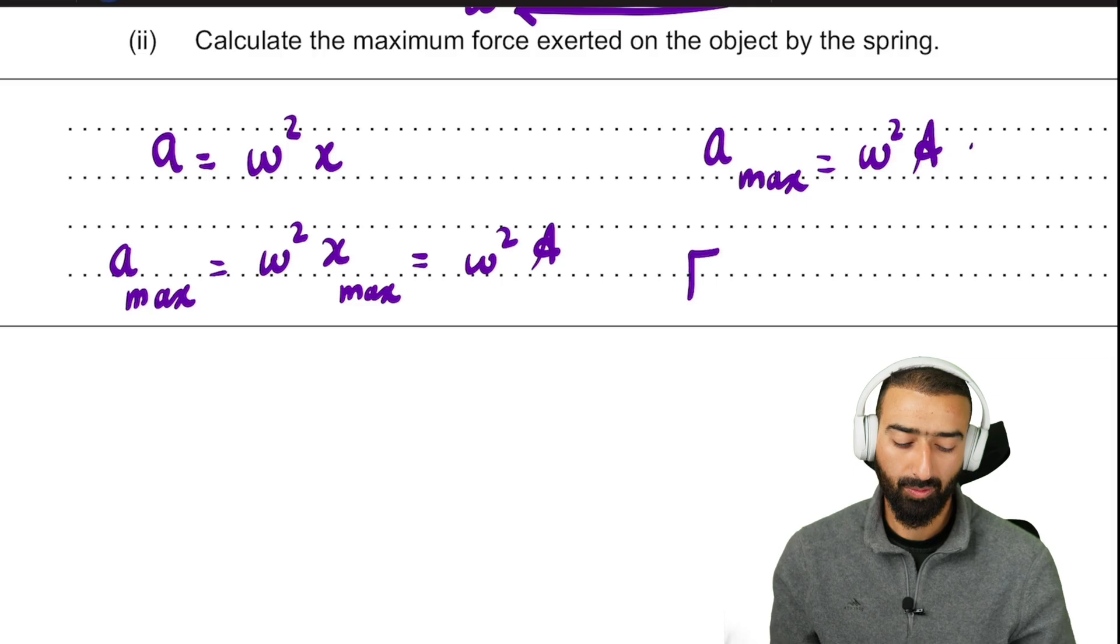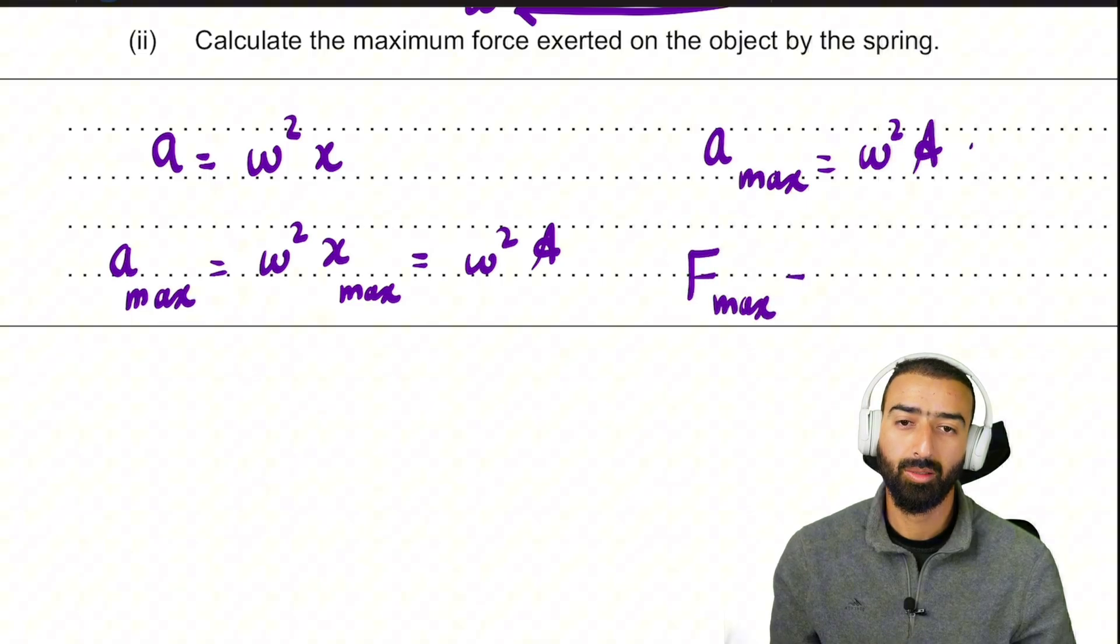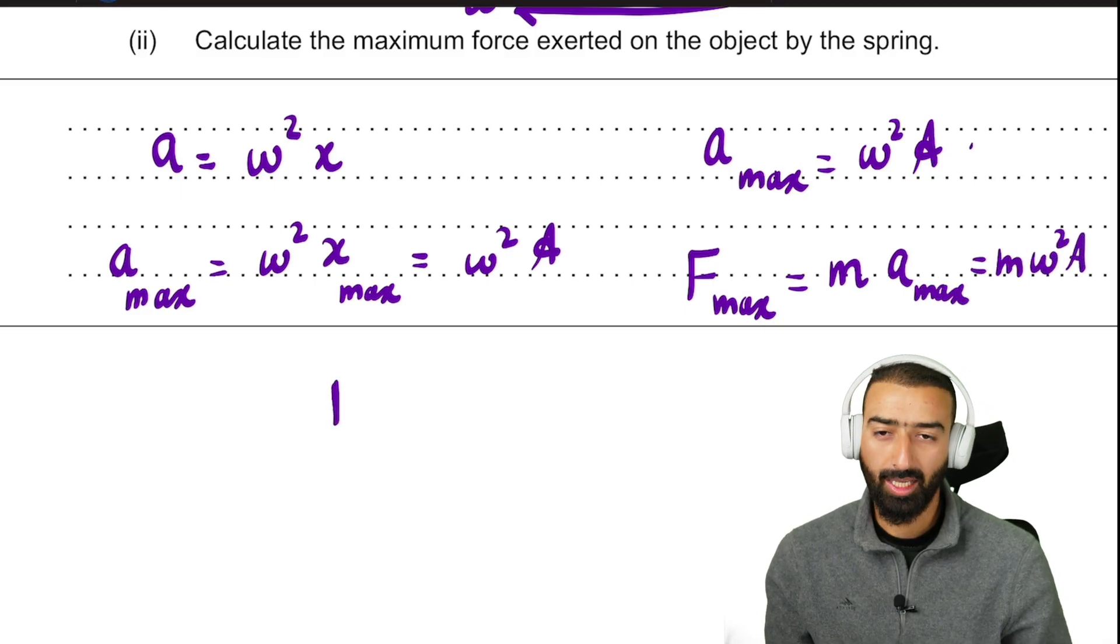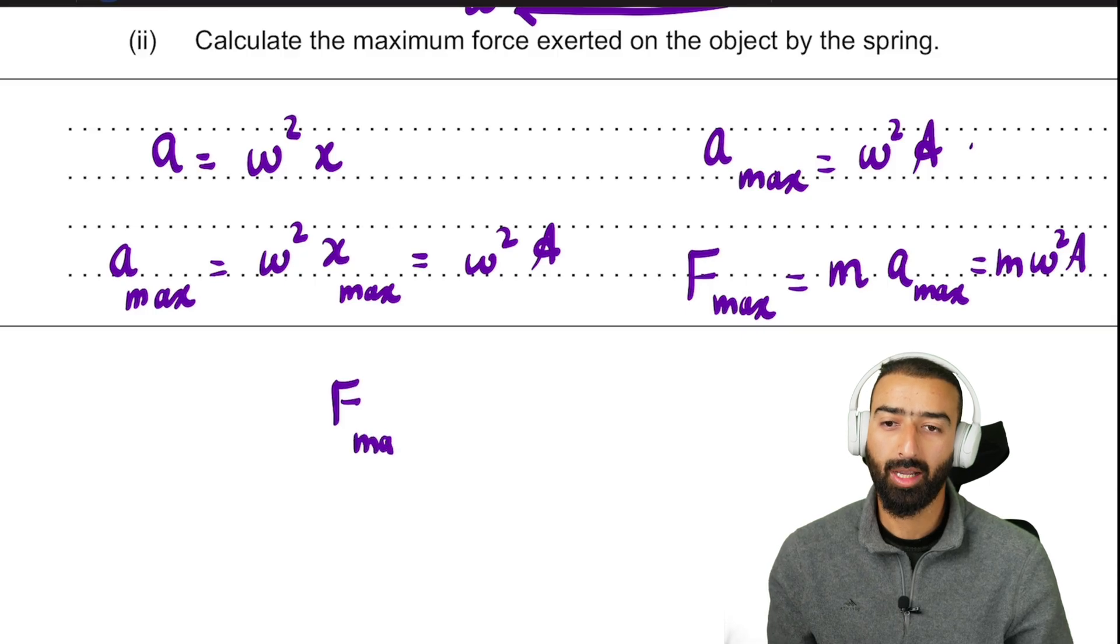Maximum displacement is simply amplitude. So we get an equation. A max equals omega square amplitude. To find the force max, we simply multiply by mass. M times A max. Before, which is M omega square A. So we have a neat equation here. The maximum force exerted is mass omega square amplitude.